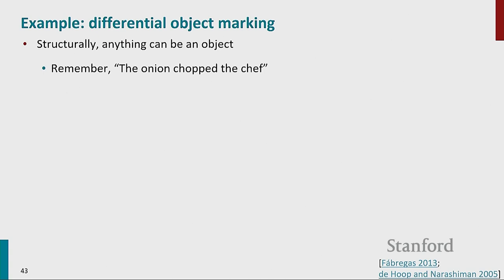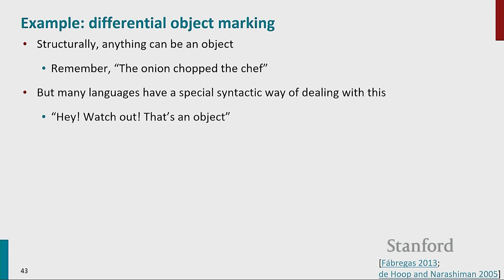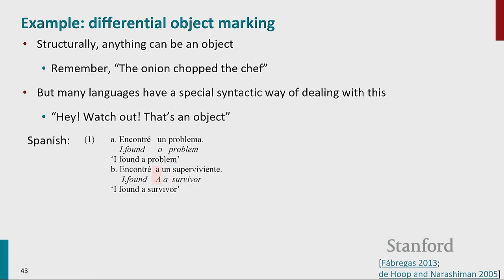Going through some examples of how meaning plays a role in forming syntax. Anything can be an object or subject — we want to be able to say anything. But many languages have a special syntactic way of dealing with unexpected arguments. In Spanish, if you know the language, you know the 'a' constraint: if something is an inanimate object, you don't need the 'a' marker — 'I found a problem.' But if you put an animate thing in object position, you need to mark it, and that's a rule of the grammar. Similarly, Hindi has a more subtle but cool version: if an object is definite, you have to mark it with a little accusative marker.